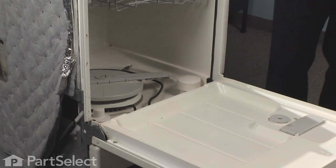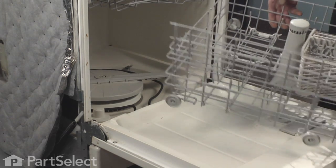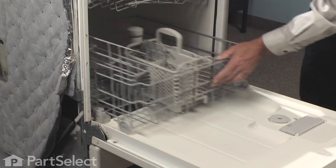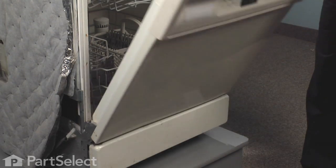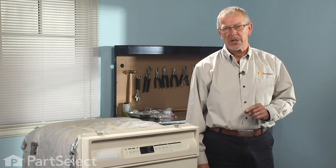Now we need to reinstall the lower rack. Make sure the tine portion is at the back of the dishwasher, slide it into place, make sure it rolls freely, and our repair is complete. That's just how easy it is to put a lower wheel assembly on your dishwasher rack.